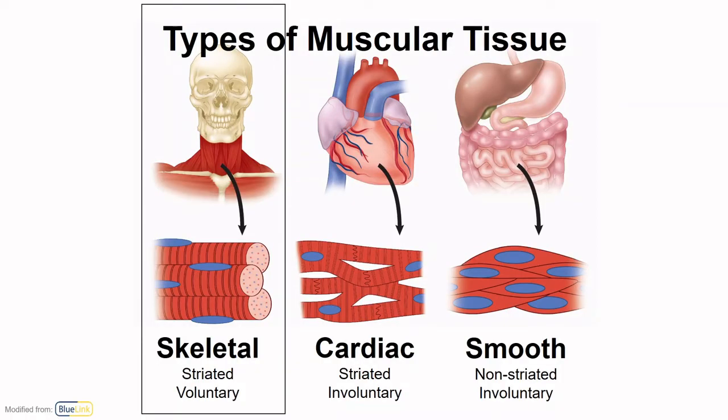There are three types of muscle tissue. They have similar properties but differ microscopically. Striated muscles have dark and light bands under the microscope. Muscle types also vary on the number of nuclei and whether they are activated voluntarily or involuntarily. Our focus in this block will be on skeletal muscle, which is for the most part voluntary.